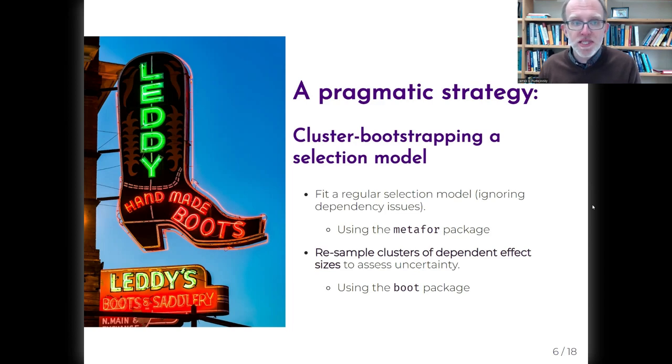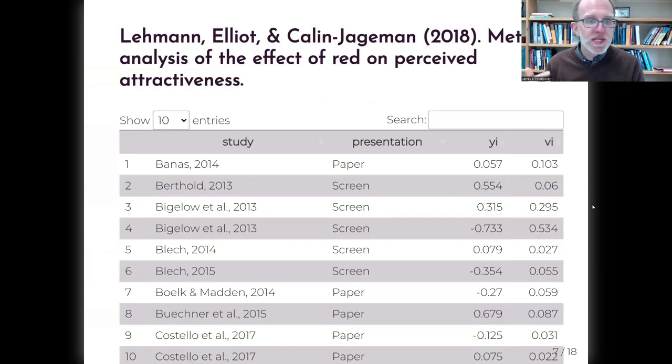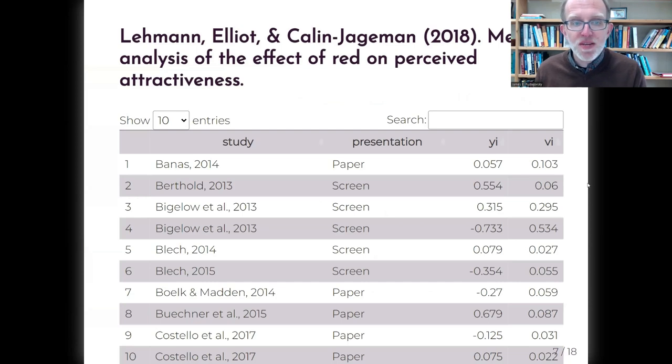This uses standard methods that are implemented in the boot package. For demonstrating this method, we'll use data from a recent meta-analysis by Lehman and colleagues that looked at the effect of the color red on attractiveness judgments. The data include 81 effect sizes from 41 studies, and so we've got effect size dependency issues to deal with.